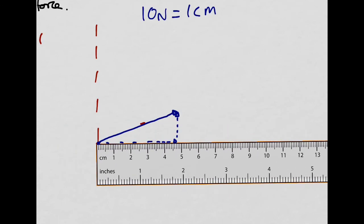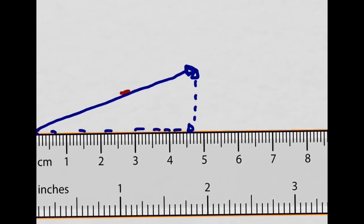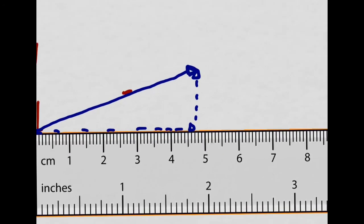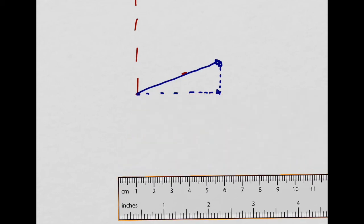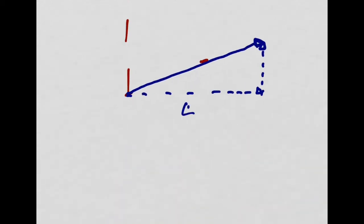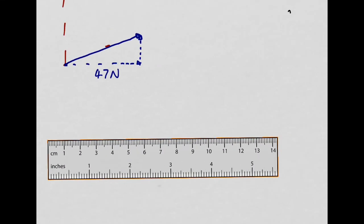So here's my ruler. Let's measure it again. So I'm getting 47 on the bottom. So 47 newtons in the horizontal direction.